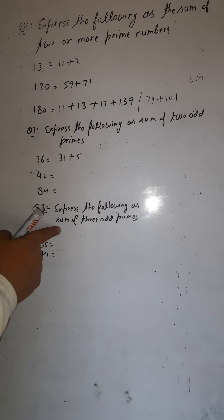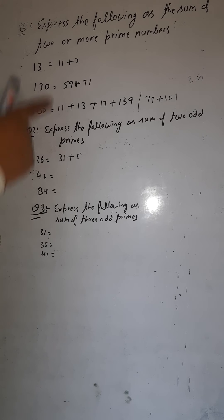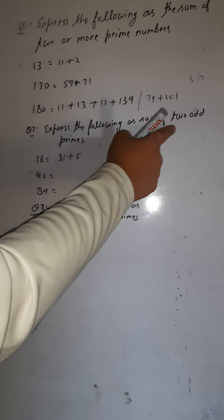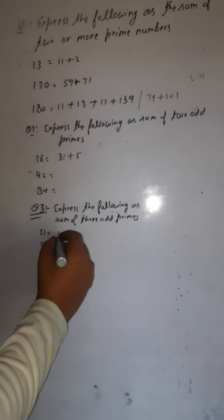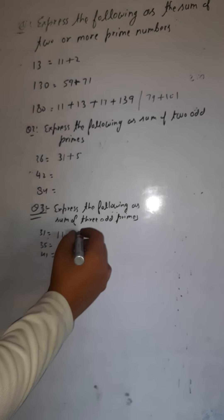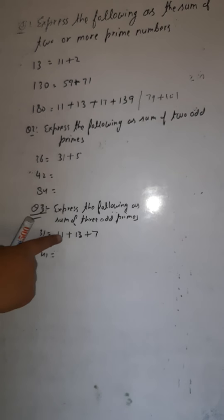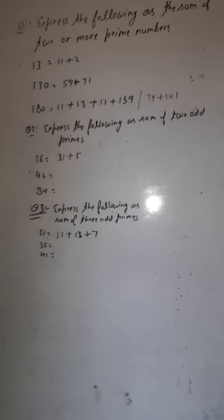Next: express the following as the sum of three odd primes. Again, you cannot use 2. Express 31 as the sum of three odd primes: 31 equals 11 plus 13 plus 7. All three are prime and odd, and their sum is 31. Similarly, express 35 and 41 on your own.